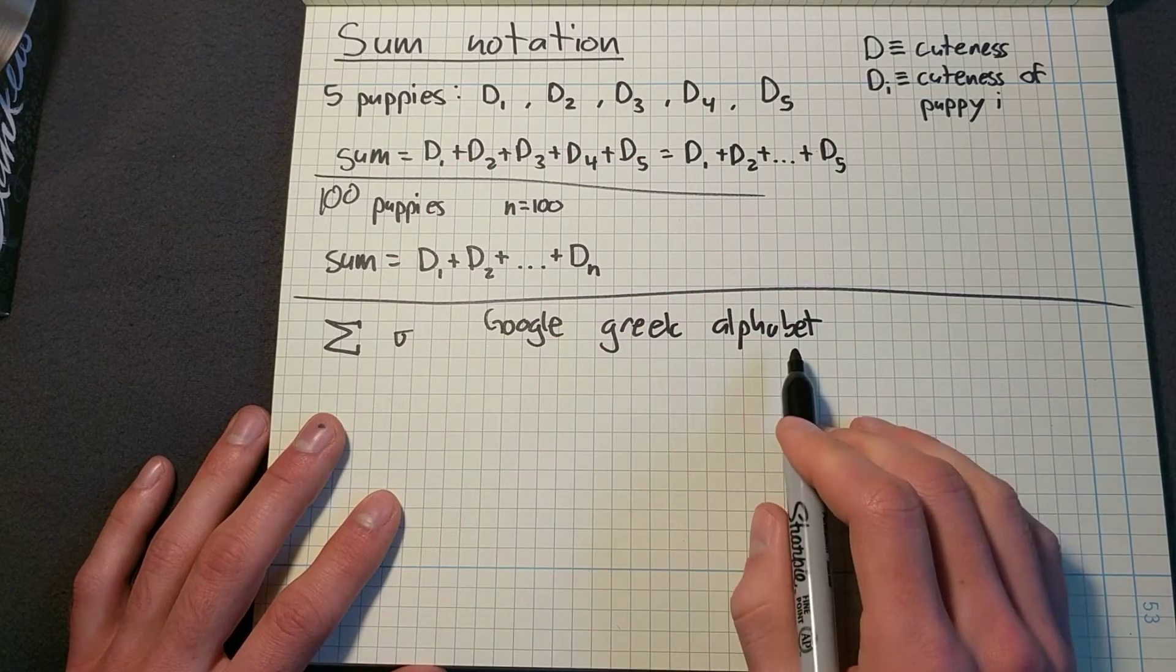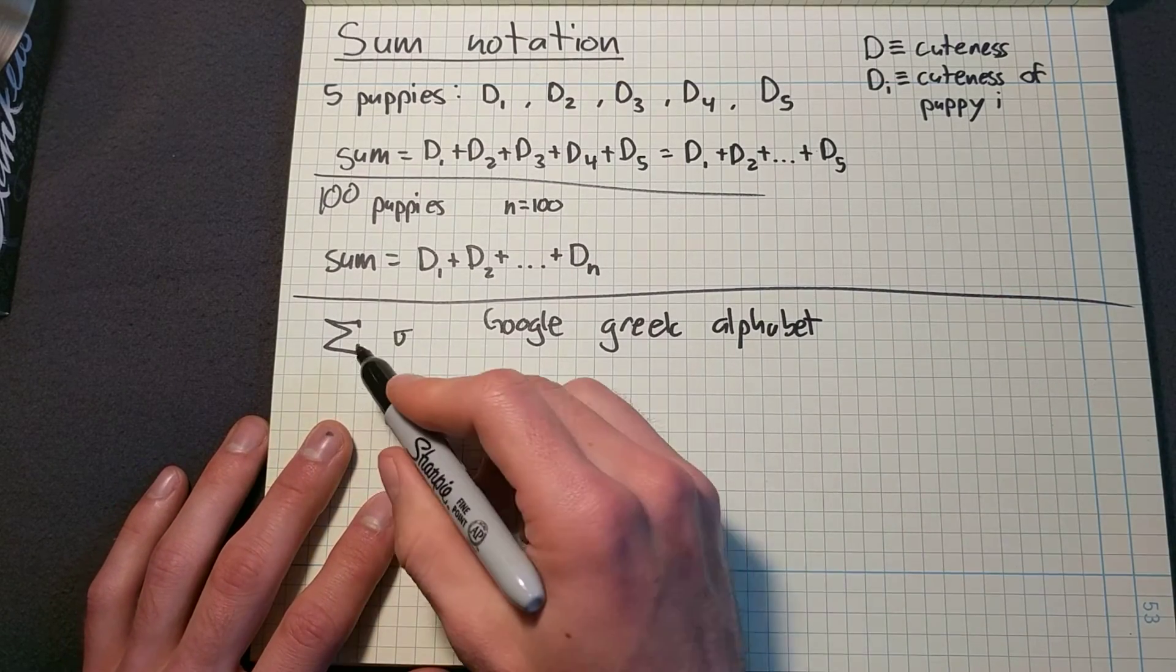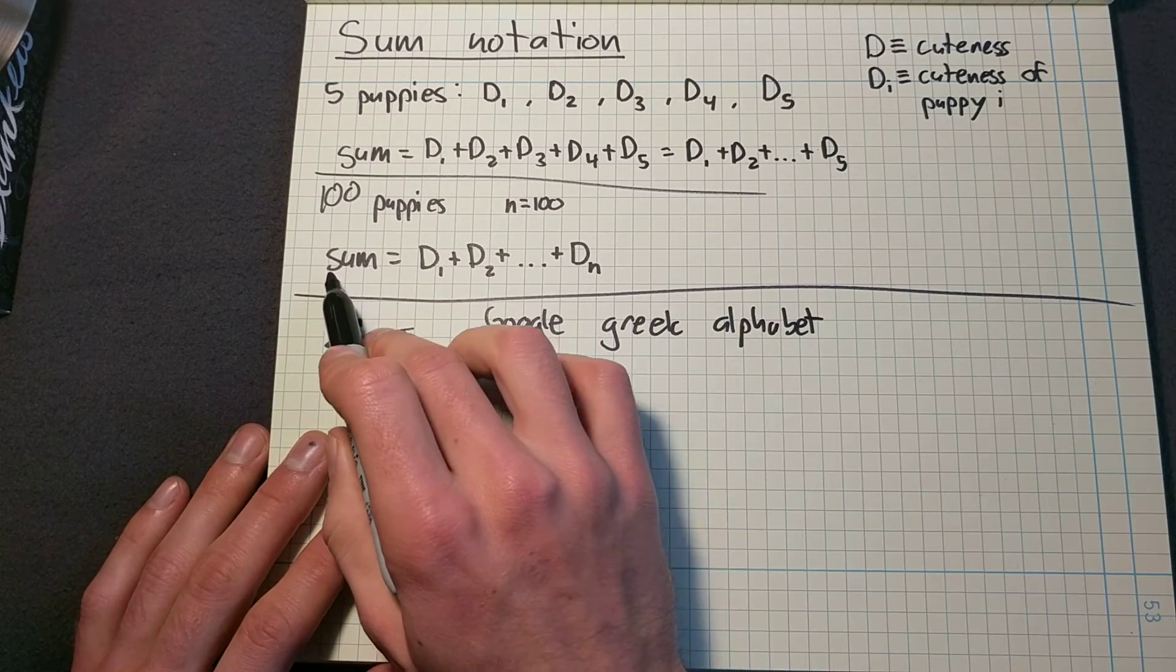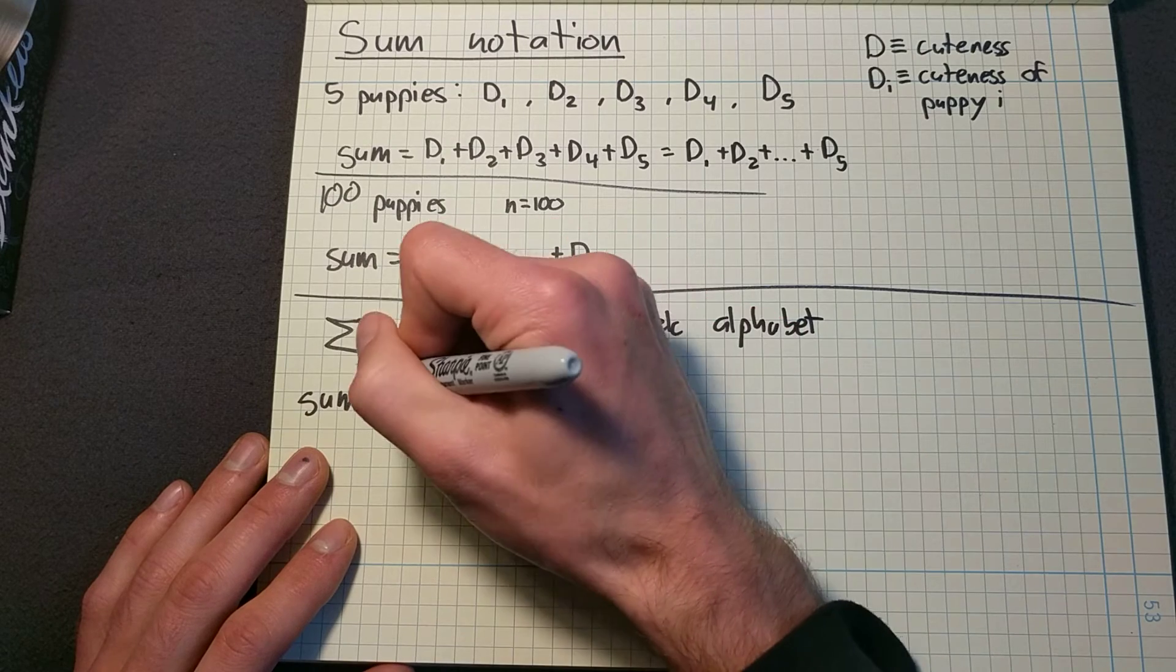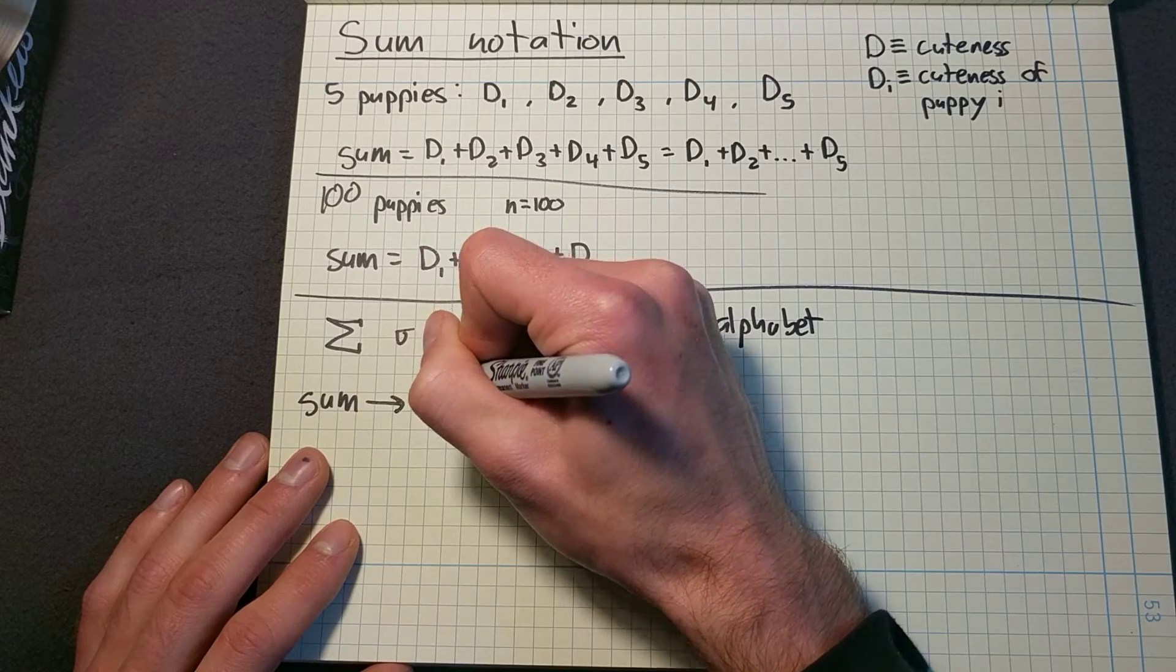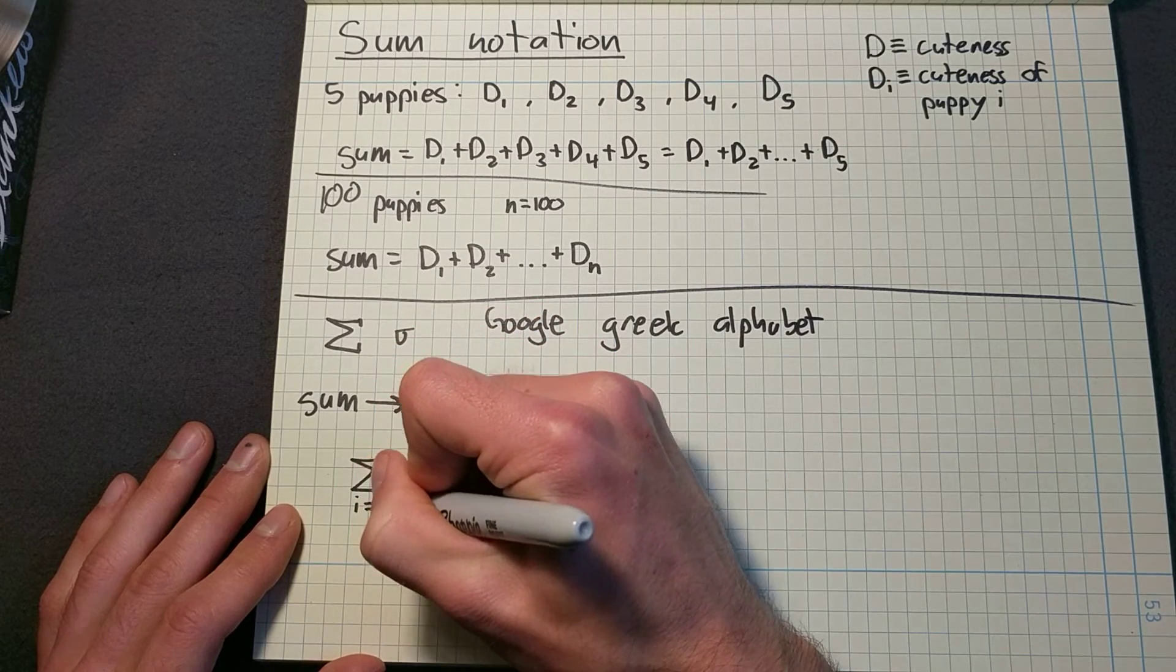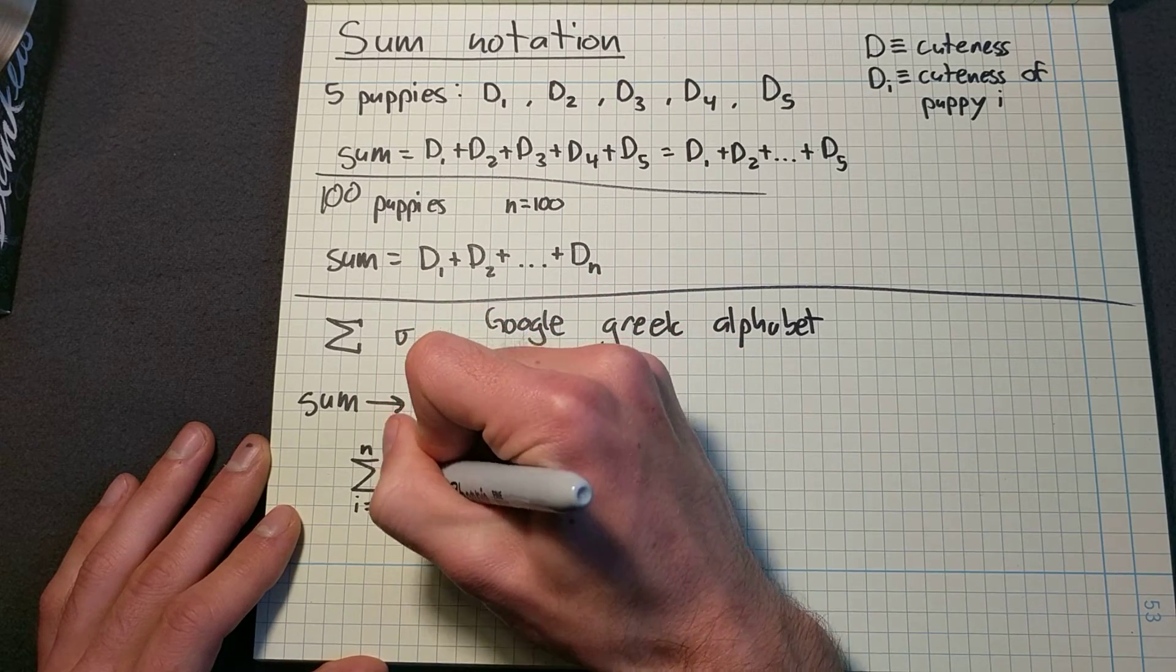And there's a whole bunch of other letters in the Greek alphabet that are typically used in mathematics just because it looks different. So at some point, someone decided that this sigma is going to be used to mean sum. So I'm going to say sum here and this is going to be equivalent to sigma. And when I do sigma, I equals one to N of D I.